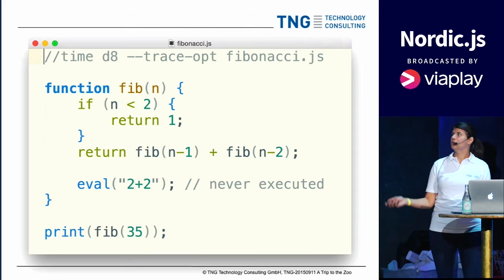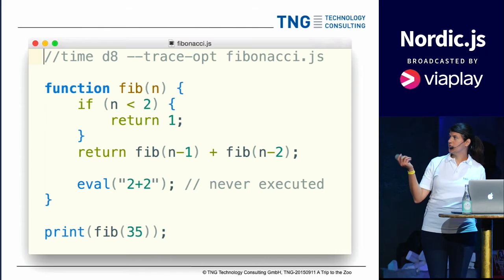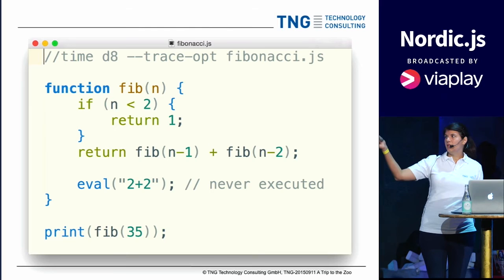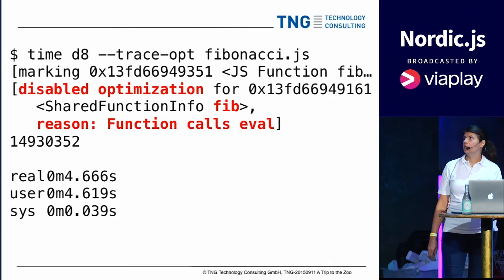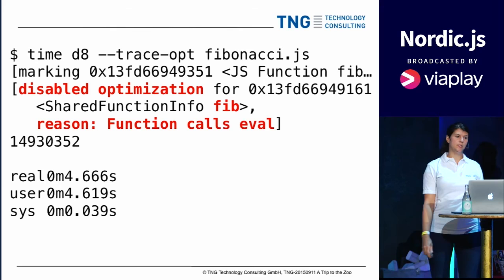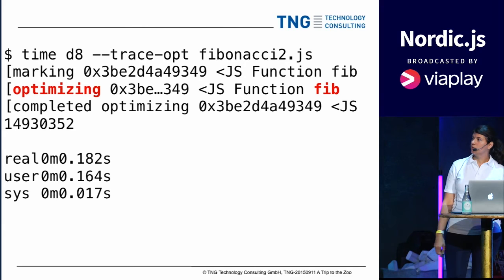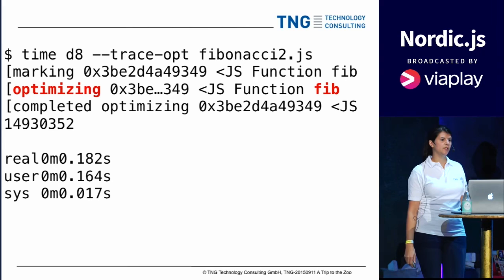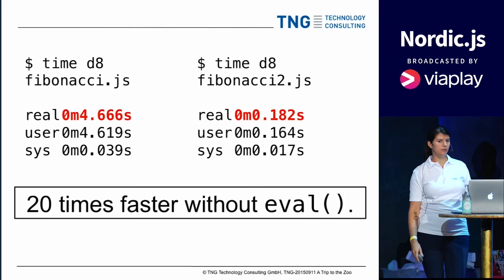Let's see an example because it seems so silly. I want to compute Fibonacci numbers — the series is 1, 1, and every next number is the sum of the last two. It's a very simple recursive algorithm. For some reason there's an eval('2 + 2') hanging out here after the return statement — we'll never get to that point. But if we run this with --trace-opt, the compiler says 'nope, there's an eval somewhere — not optimizing,' even though it's after the return statement. We have to wait over four seconds. Let's delete that line and run again: it optimizes the Fibonacci function and runs in 200 milliseconds. Four seconds versus 200 milliseconds for deleting a line that was never called — more than 20 times faster just by deleting this extra line. You shouldn't use eval anyway because of maintainability, but even if your code is bug-free, it will slow you down a lot.